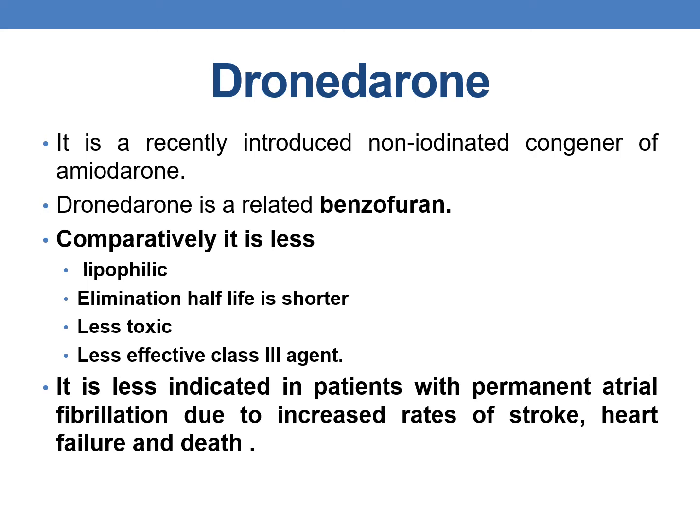The next drug is dronedarone, a recently introduced non-iodinated congener of amiodarone. It does not contain iodine and is a related benzofuran. Compared with amiodarone, it is comparatively less lipophilic, has a shorter elimination half-life, and is a less toxic but also less effective Class 3 agent. It is less indicated in patients with permanent atrial fibrillation due to increased rates of stroke, heart failure, and death.